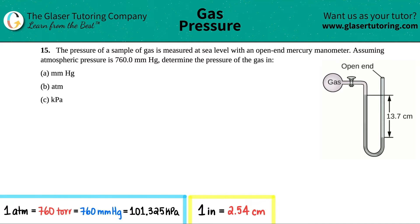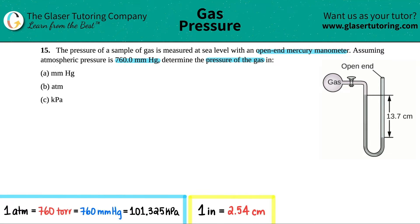Number 15: the pressure of a sample of gas is measured at sea level with an open-ended mercury manometer. Assuming atmospheric pressure is 760.0 millimeters of mercury, determine the pressure of the gas in three units: millimeters of mercury (mmHg), atmospheres (atm), and kilopascals (kPa). We have a drawing of a manometer to work with.